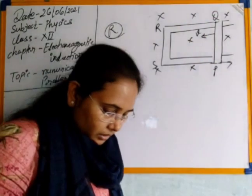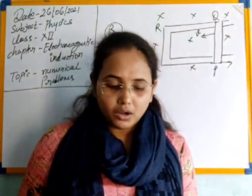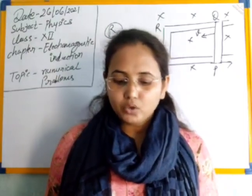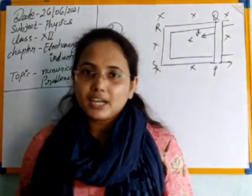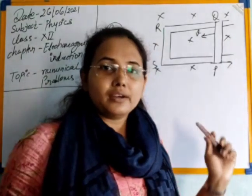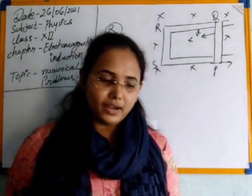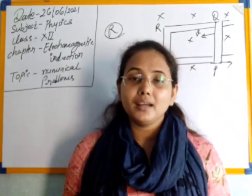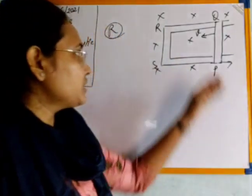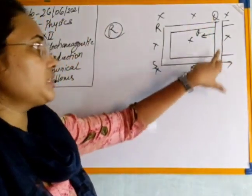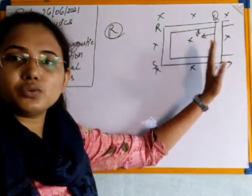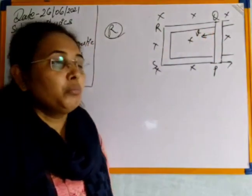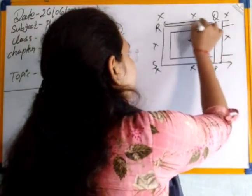We have to derive expressions for: first, the current in the loop; second, the force; and third, the power required to move the arm PQ. This situation is the same as what we derived for motional EMF - the U-shaped rail where only PQ arm is free to move. At any time if PQ moves to a distance x, with the arm length l, the area equals l × x.